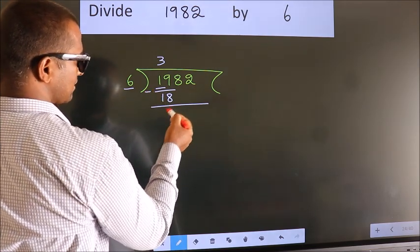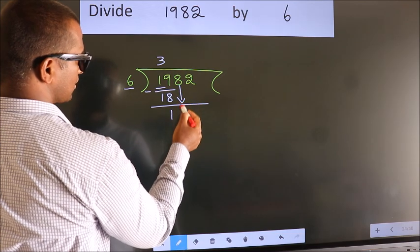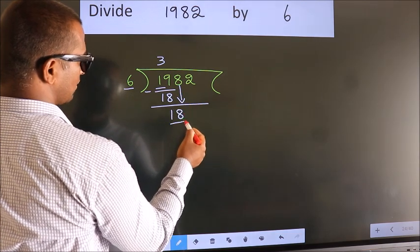After this, bring down the beside number. So 8 down. So 18.